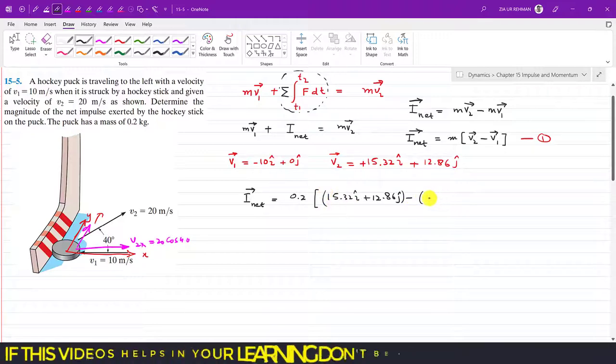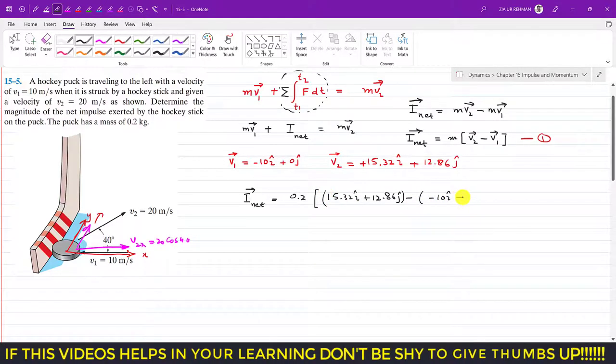So v1 is -10i plus 0j. And if I multiply this minus sign inside, that will become 0.2 times 15.32i plus 12.86j plus 10i.